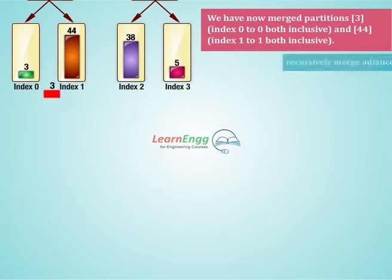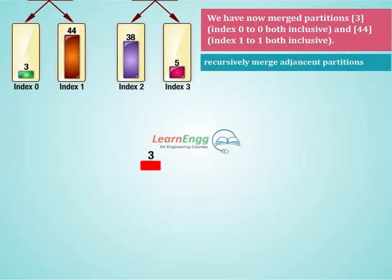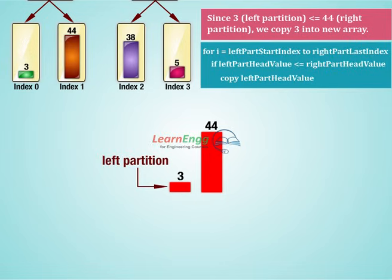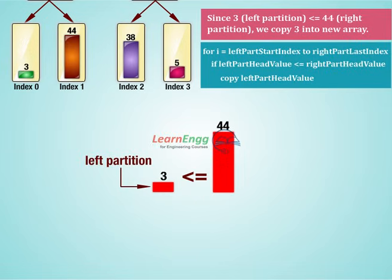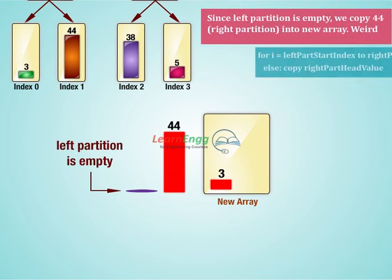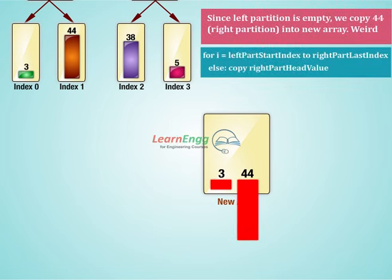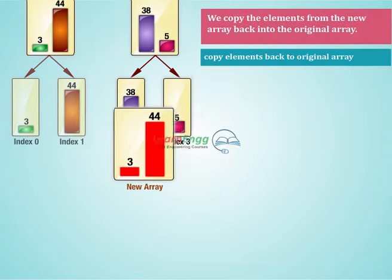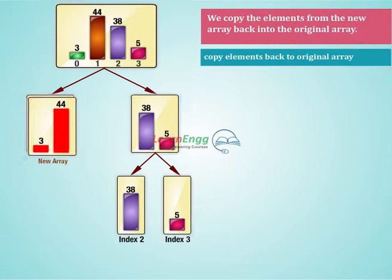We now merge partitions: array element 3 at index 0 to 0 (both inclusive) and array element 44 at index 1 to 1 (both inclusive). Since 3 (left partition) is less than or equal to 44 (right partition), we copy 3 into the new array. Since the left partition is now empty, we copy 44 from the right partition into the new array. We then copy the elements from the new array back into the original array.